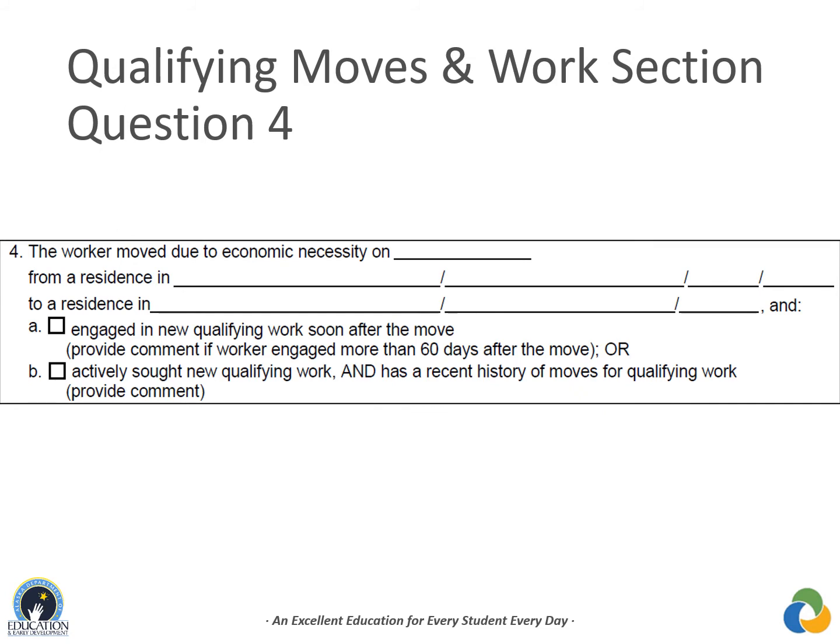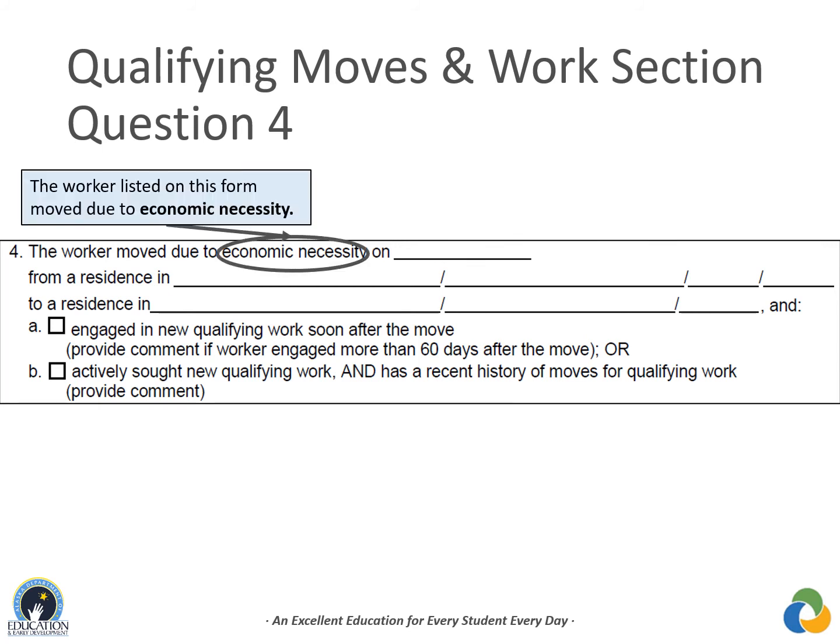Questions 4–6 document the move that makes the worker a qualifying worker. Question 4 reads: 'The worker moved due to economic necessity on [date] from a residence in [blank] to a residence in [blank],' and asks the recruiter to mark either checkbox A — 'engaged in new qualifying work soon after the move' (with a required comment if more than 60 days after the move) — or checkbox B — 'actively sought new qualifying work and has a recent history of moves for qualifying work' (always requires a comment). The recruiter must verify all moves were made due to economic necessity.